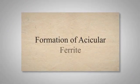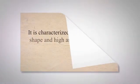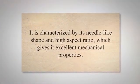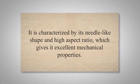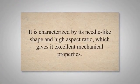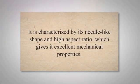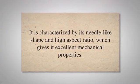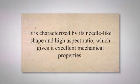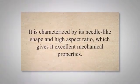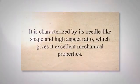Formation of acicular ferrite. Acicular ferrite is a unique microstructure that can be formed in steel during the cooling process. It is characterized by its needle-like shape and high aspect ratio, which gives it excellent mechanical properties. The formation of acicular ferrite is dependent on several factors, including the chemical composition of the steel, cooling rate, and transformation temperature.